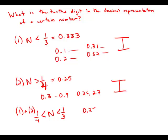And another way to say that is it would have to be greater than 0.25, but less than 0.333. So, what are the possibilities?